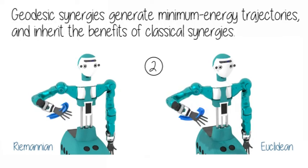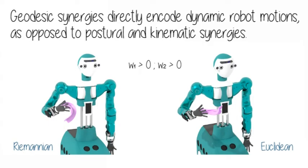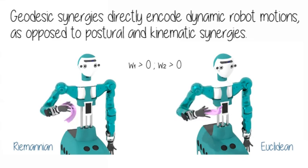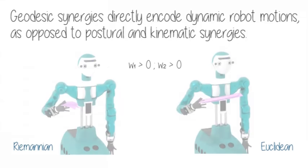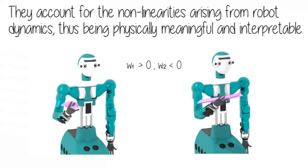Geodesic synergies generate minimum energy trajectories and inherit the benefits of classical synergies. They directly encode dynamic robot motions, as opposed to postural and kinematic synergies. They account for the non-linearities arising from robot dynamics, thus being physically meaningful and interpretable.